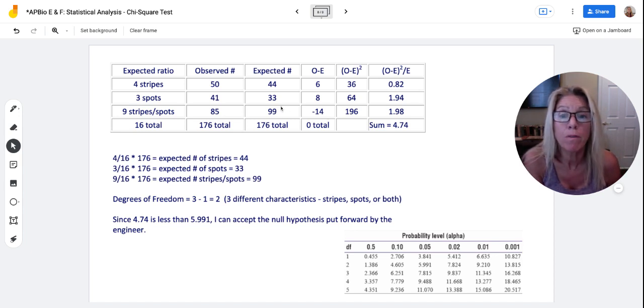And then 85 minus 99 is minus 14. You square it, gives you positive number over what I expected, 99, and I'm going to get 1.98. Then the sum part, that Σ, I sum it up these three values, and my chi-square value is 4.74.